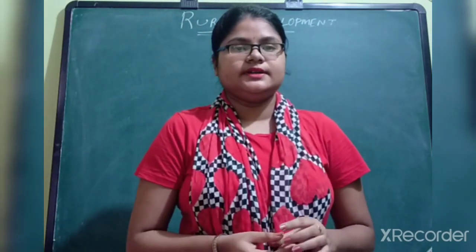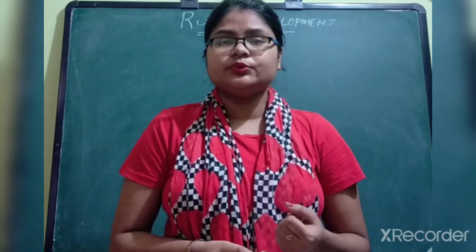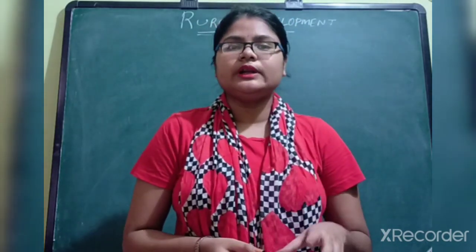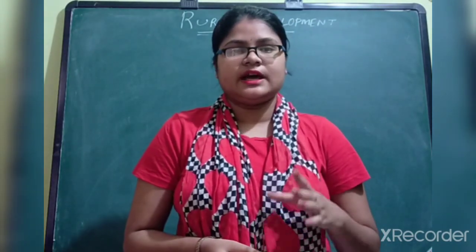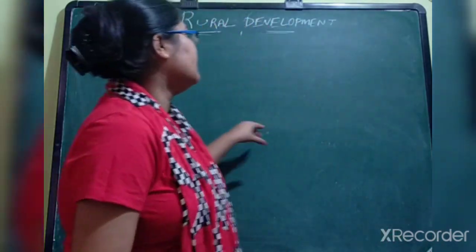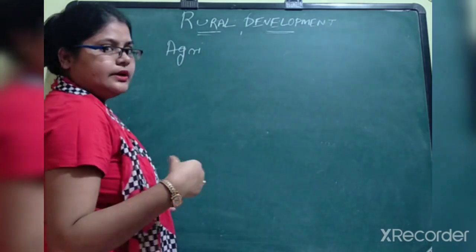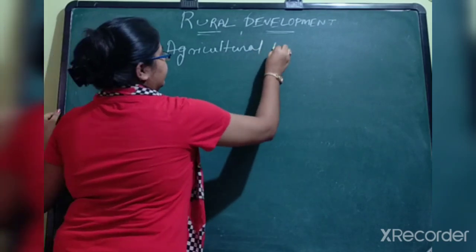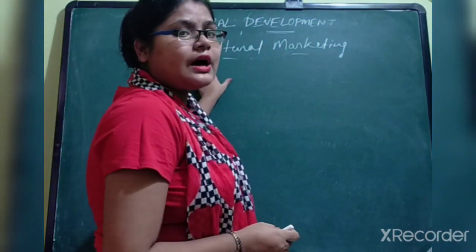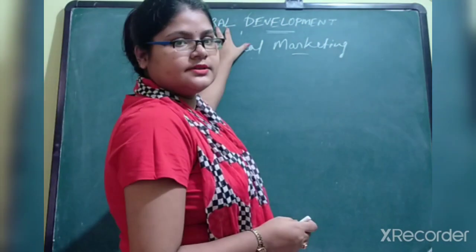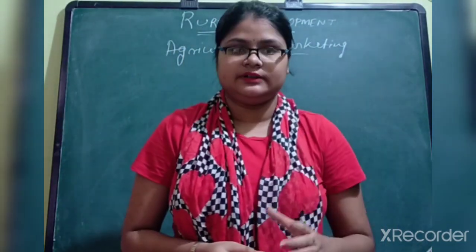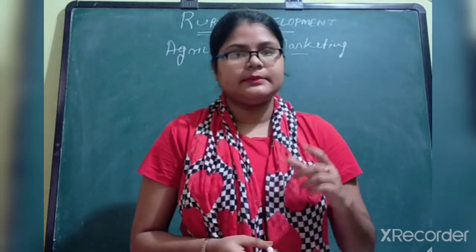This chapter on Rural Development is from Indian Economy. Rural development means the overall development of rural areas — all facilities must be provided in rural areas so that they can develop. Agriculture is one of the main sources of income in rural areas; about one third of the population is dependent on it and engaged in primary activities.